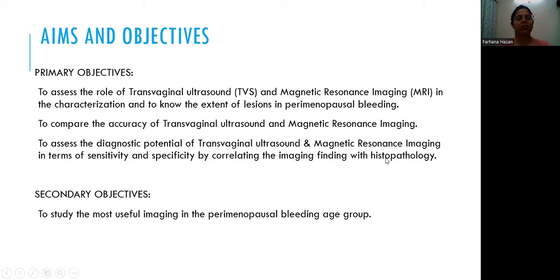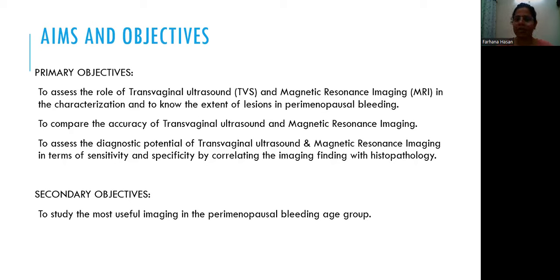The aim of the study is to assess the role of TDS and MRI in the characterization and to know the extent of lesions in perimenopausal bleeding, and to compare the accuracy of TDS and MRI. To assess the diagnostic potential of TDS and MRI in terms of sensitivity and specificity. The secondary objective is to know the most useful imaging modality of choice.